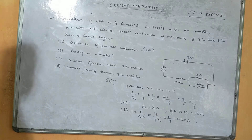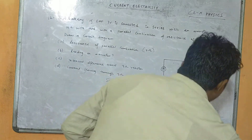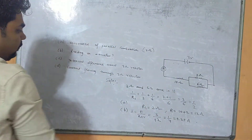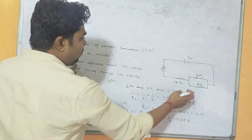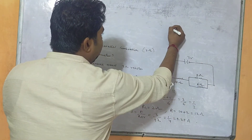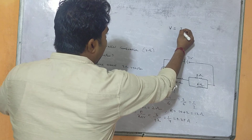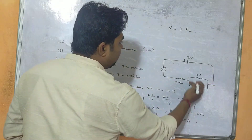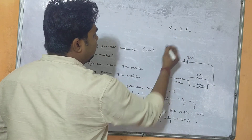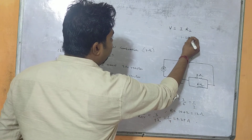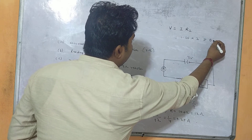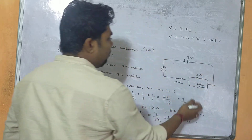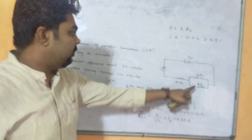Third, we calculate the potential difference across the 3 ohm resistor. The potential difference equals I × R1. Since 3 ohm is in parallel with 6 ohm, we use R1 = 2 ohm (the combined parallel resistance). So V = 0.25 × 2 = 0.5 volt. The potential difference across the 3 ohm resistor is 0.5 volt.